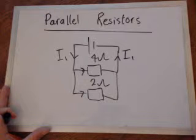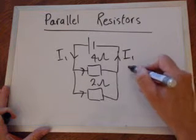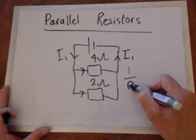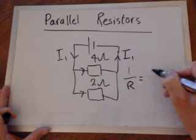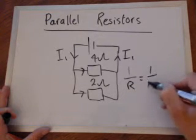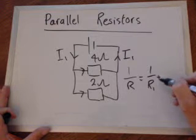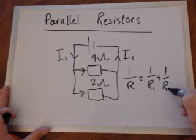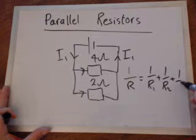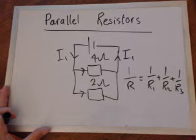And the formula that goes with this is that one over the total resistance is equal to one over resistor one, plus one over resistor two, plus one over resistor three, and so on.